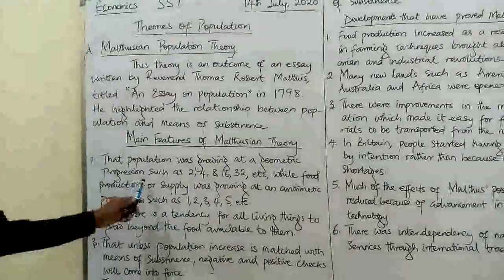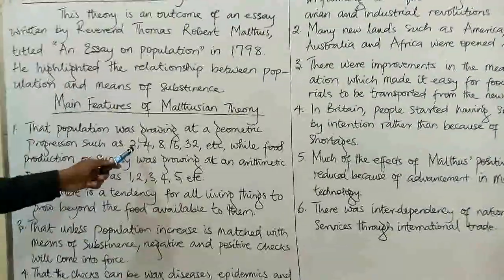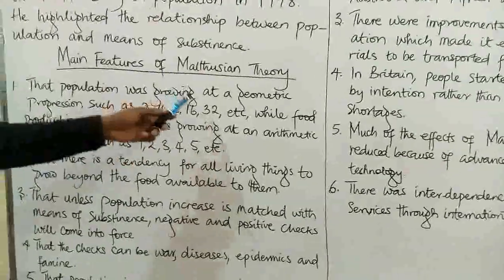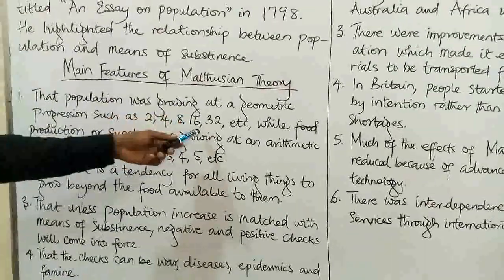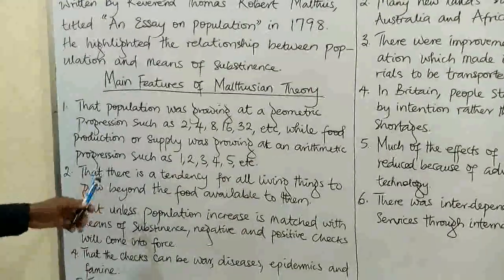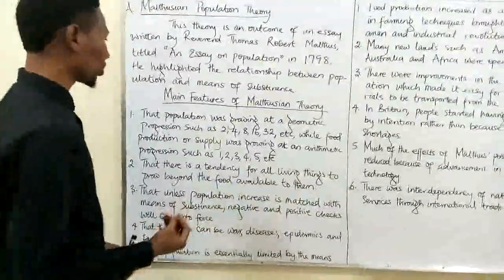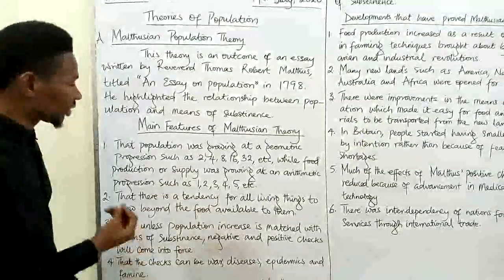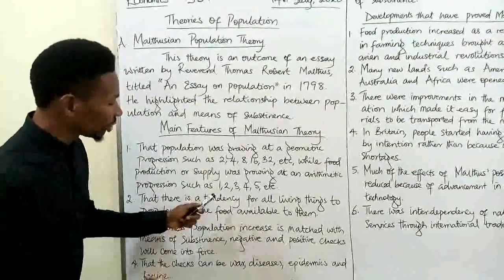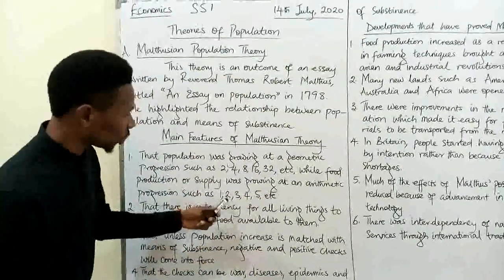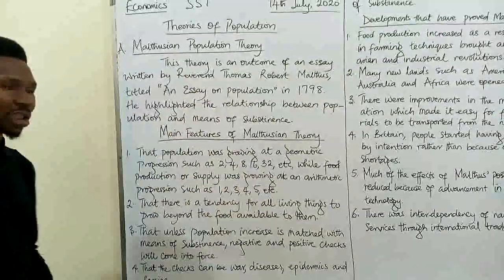That is why we see geometric progression of population rising from 2 to 4, 4 to 8, 8 to 16, 16 to 32 and so on. But food, which is a means to sustain the people that were growing in number, was not going to be enough to sustain them. Food was growing slowly compared to the rate of population — growing from 1 to 2, 2 to 3 — which of course is a huge discrepancy.